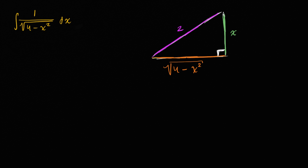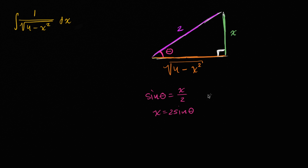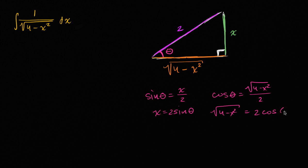This is where the trigonometry comes in. If this angle is theta, then sine of theta equals opposite over hypotenuse, which is x over two, so x equals two sine theta. And cosine of theta equals the adjacent side — square root of four minus x squared — over the hypotenuse of two, meaning the square root of four minus x squared equals two cosine theta. So if x equals two sine theta, this entire expression simplifies to two cosine theta.